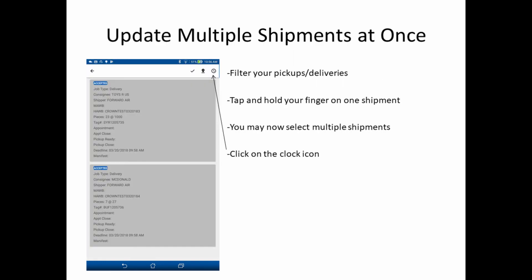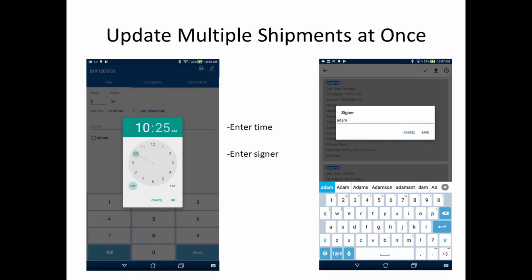A brand new feature of Crown Mobile V2 is the ability to update multiple shipments at once. First, filter your shipment list by either your pickups or deliveries. Then, tap and hold your finger on one of your shipments. You may now select multiple shipments. Click on the clock icon in the upper right corner to update all of those shipments simultaneously. Enter the time, then enter the signer and tap Save.